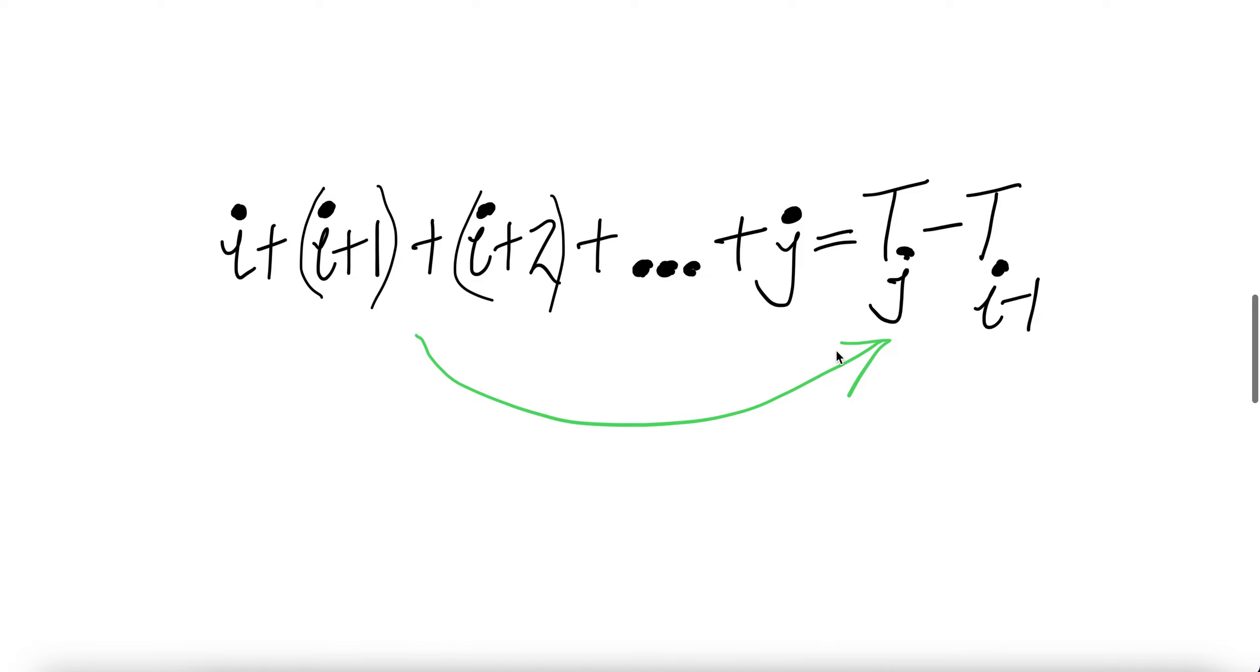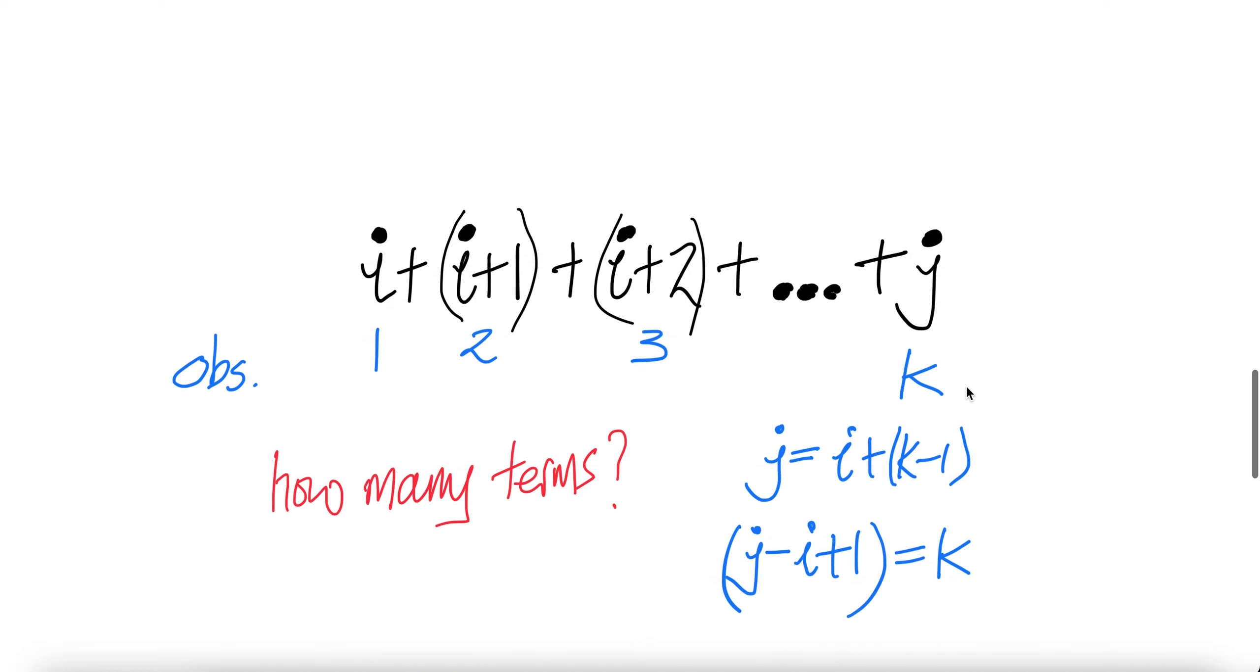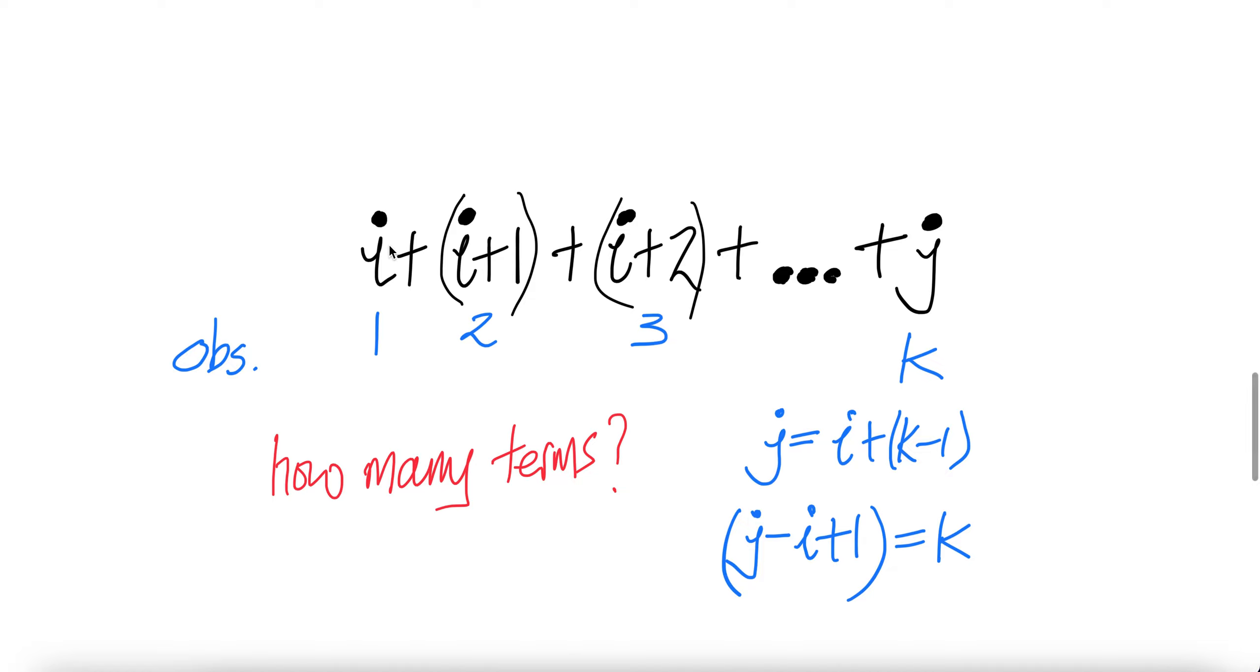Now we're going to start from here and show that it's equal to the right-hand side. We have I plus I plus 1 plus I plus 2, dot dot dot, to J. So we observe this is the first term, second term, third term.